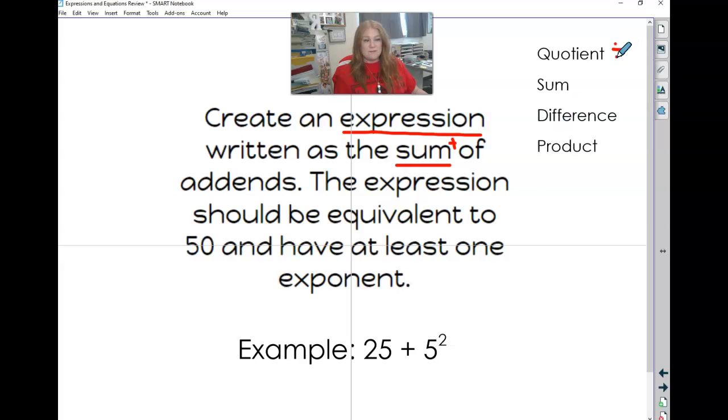So quotient is a division. Sum is add. Difference subtract. And the product is multiply.